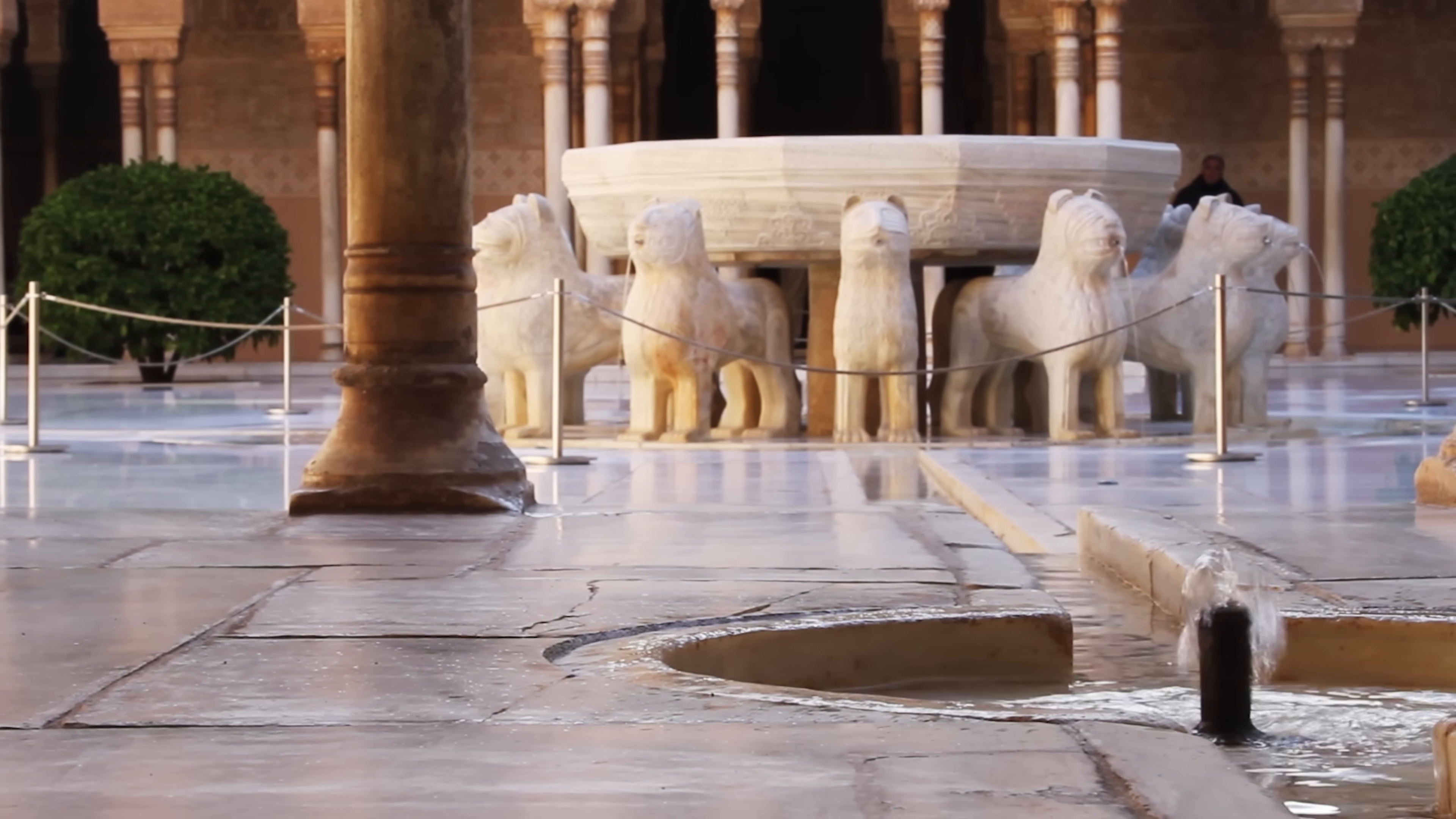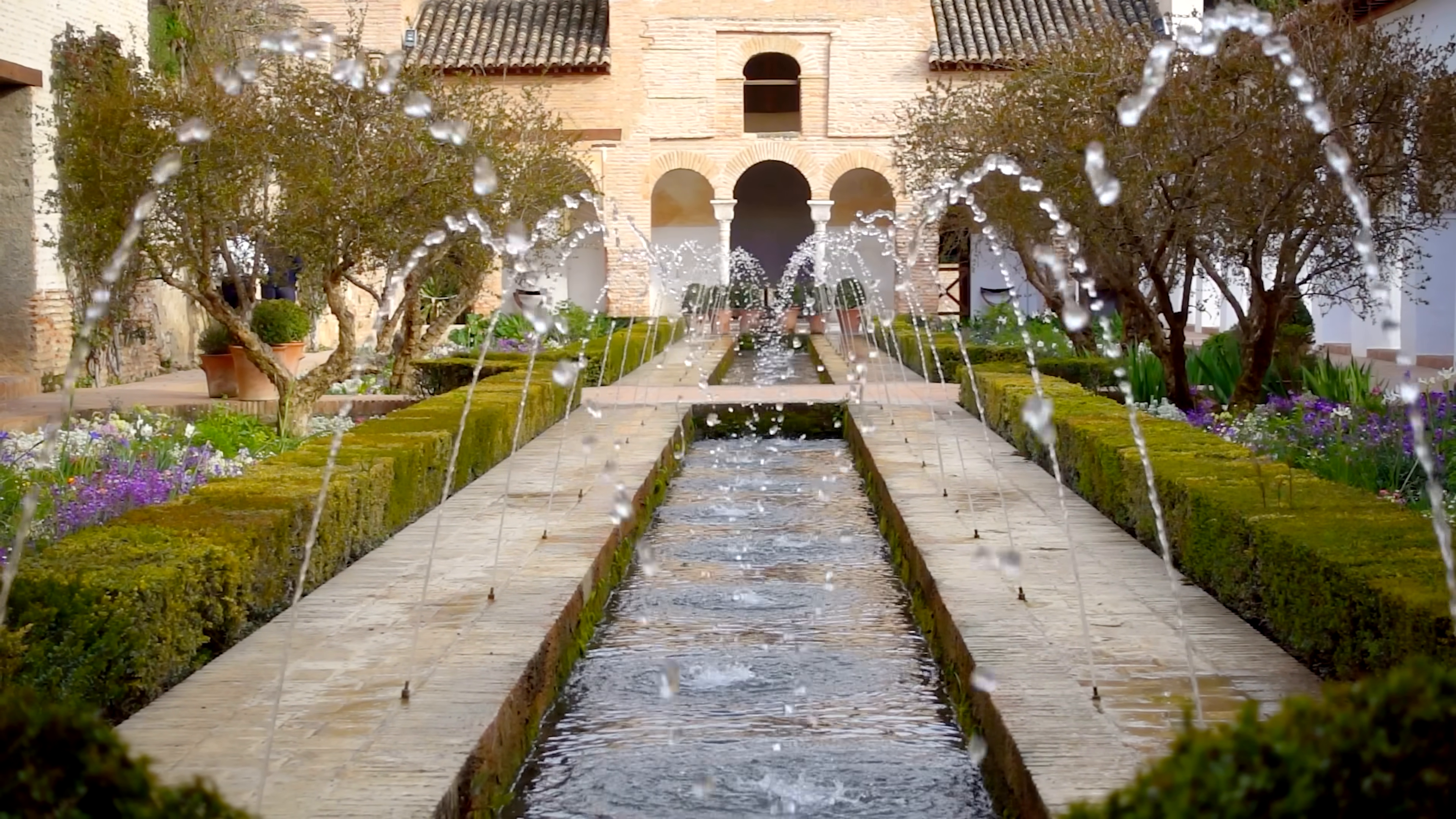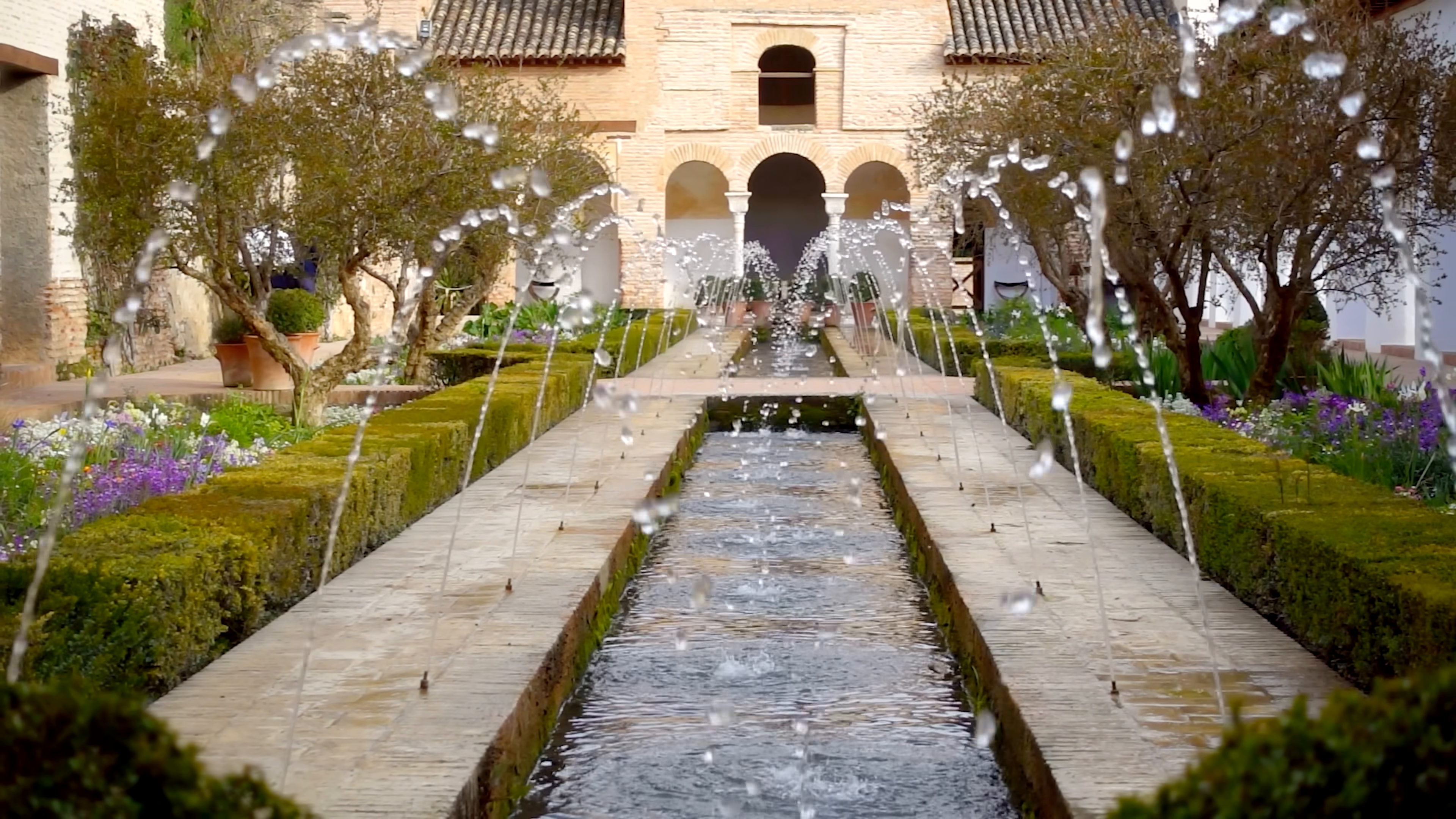Every city needs a reliable source of water, and that stood as a challenge for the Alhambra, perched high above the nearby rivers. Medieval engineers used creative solutions to divert natural sources of water and distribute it to the cisterns, baths, and fountains within the complex.